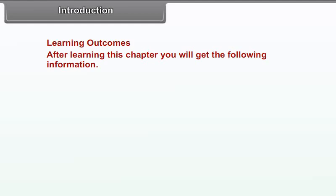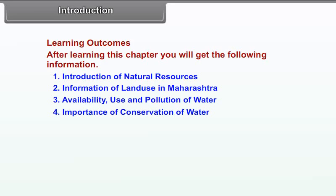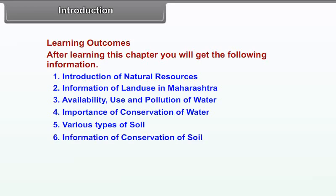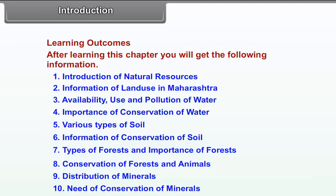Learning Outcomes: After learning this chapter, you will get the following information: 1. Introduction of Natural Resources, 2. Information of Land Use in Maharashtra, 3. Availability, Use and Pollution of Water, 4. Importance of Conservation of Water, 5. Various Types of Soil, 6. Information of Conservation of Soil, 7. Types of Forests and Importance of Forests, 8. Conservation of Forests and Animals, 9. Distribution of Minerals, 10. Need of Conservation of Minerals.